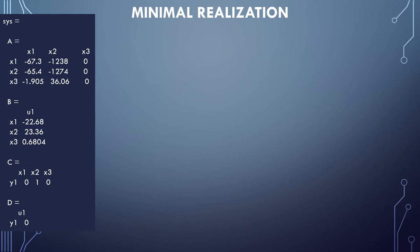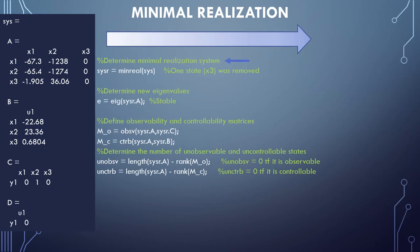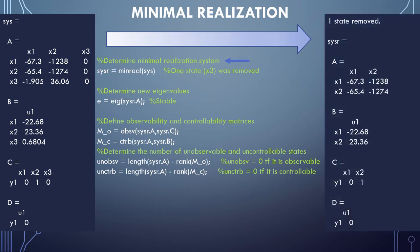This brings us back to the idea of minimal realization. A system is said to be minimally realized if it's both observable and controllable. MATLAB has a function specifically for addressing this. The minreal function accepts a system as an input and returns a minimally realized system. Note, the new system is the same as the old one, except the columns associated with the state variable x3 have both been removed here and here.